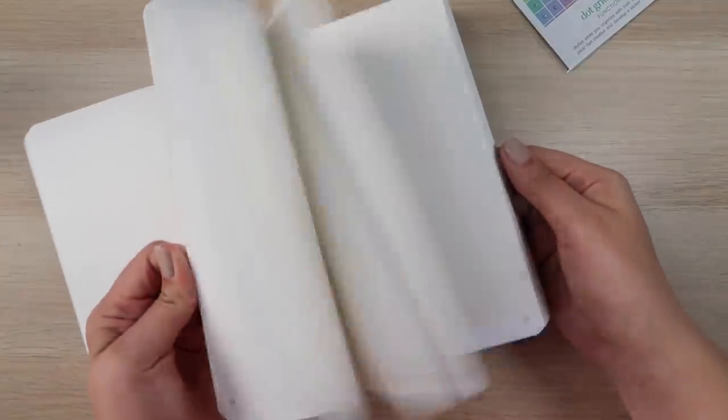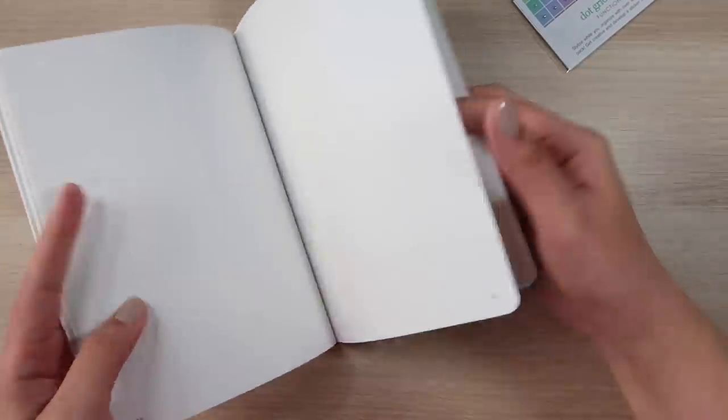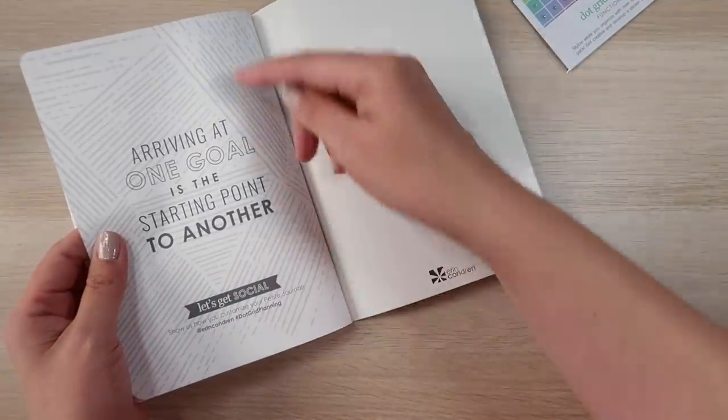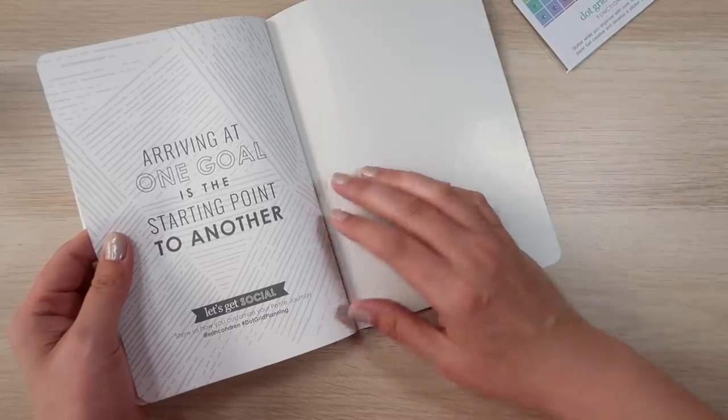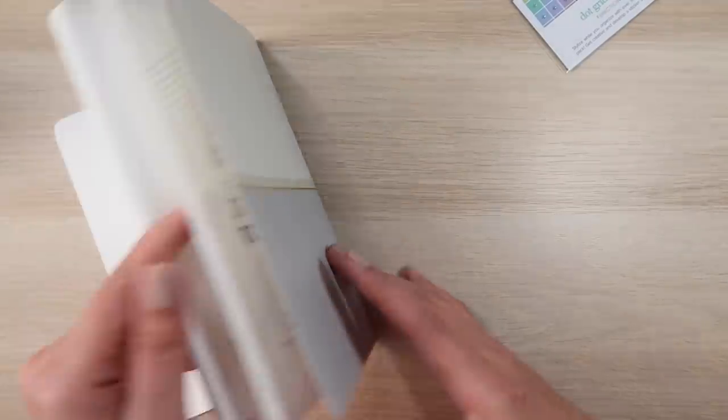Now, you get through the whole thing and it's just dot grid all the way up to, so it winds up being 76 numbered pages index and this back page here, which is like the Erin Condren advertising page. And then you have a little bit of foil on the back and that's the whole journal.